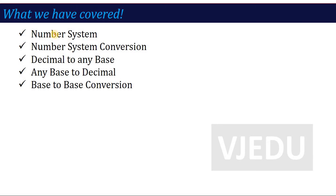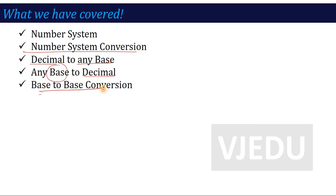In the previous lecture we covered number system, number system conversion, and three types of conversion — how we can convert any number to any base, how we can convert any base number to decimal, and the third one is base-to-base conversion: other than decimal base, if we have two bases, how we can convert between them.